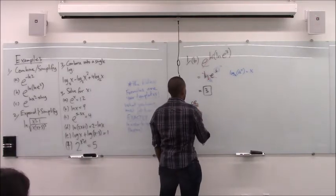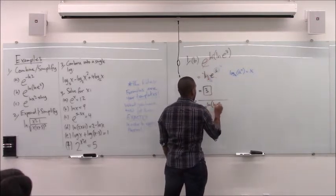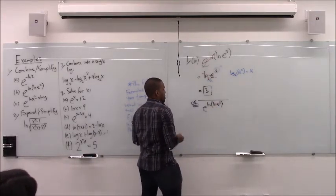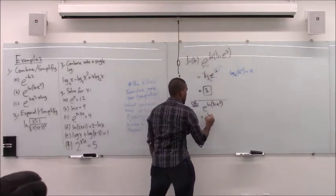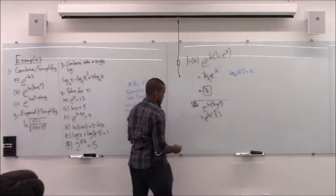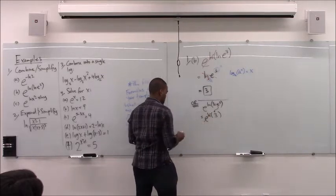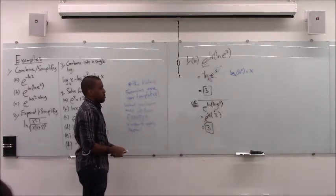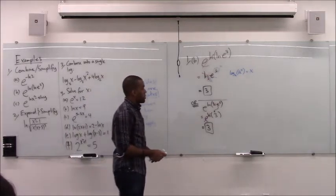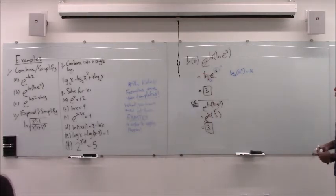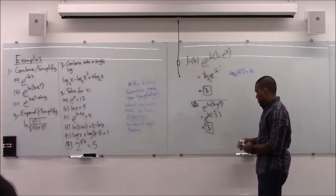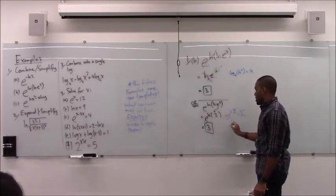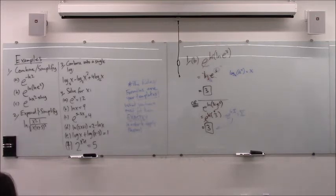I said 'which one' because you had the option. If you have e to the ln of ln of e to the 3, you could have canceled the inner ln and e first — that's also a valid step. That leaves e to the ln of 3, and then you can cancel those because of the first rule I wrote. Either way you should get to 3, but there should be a valid reason why you're making each step — e to the ln of anything is just a thing.